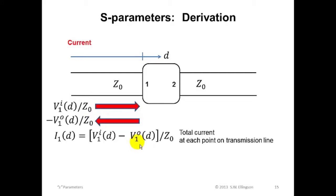We need to do the same thing for current. And this is pretty straightforward because we already know the voltages and we know how currents are related to voltages on a transmission line. The current associated with the inbound voltage wave is just V super I sub one divided by the characteristic impedance of the transmission line. And the current associated with the outbound voltage is minus V super O sub one divided by the characteristic impedance of the transmission line.